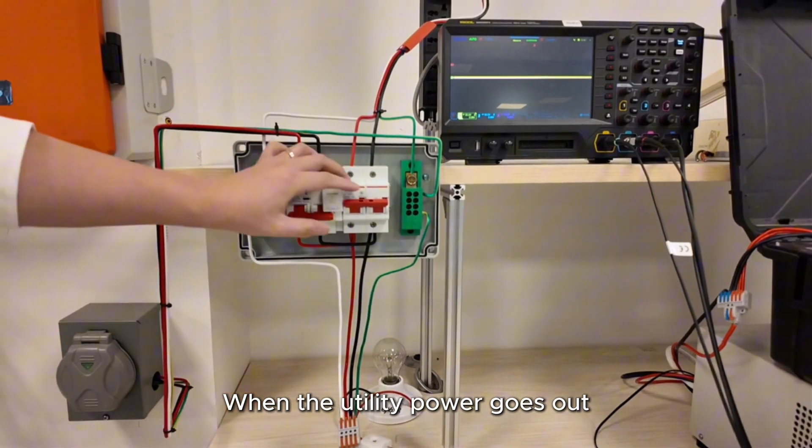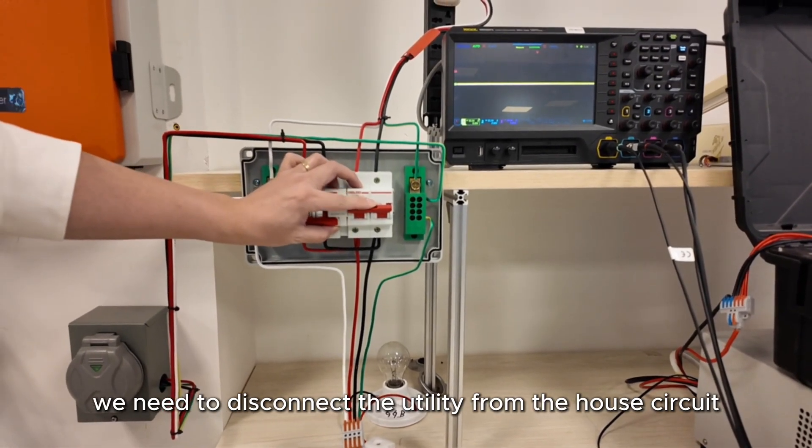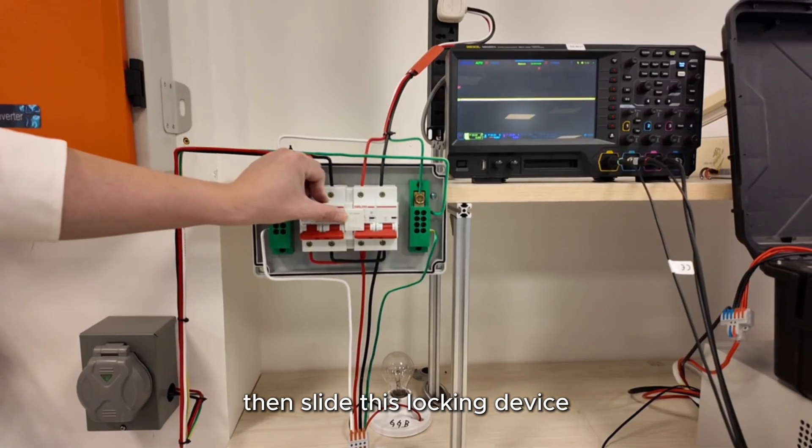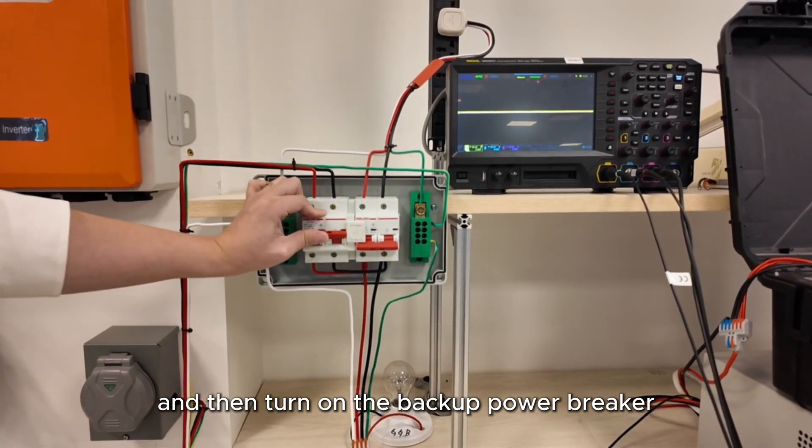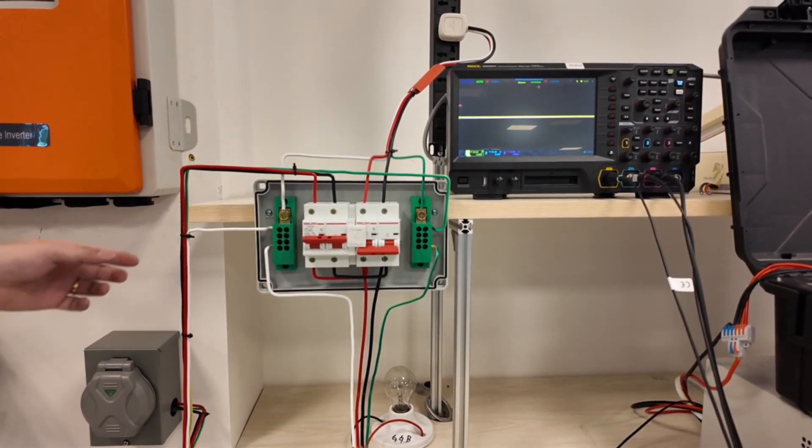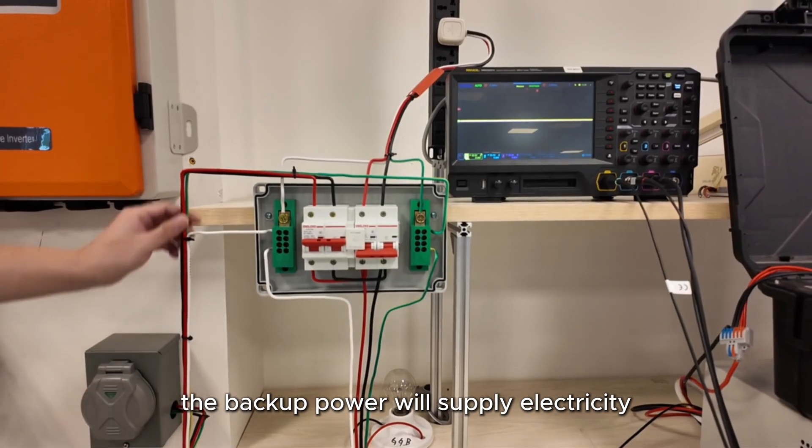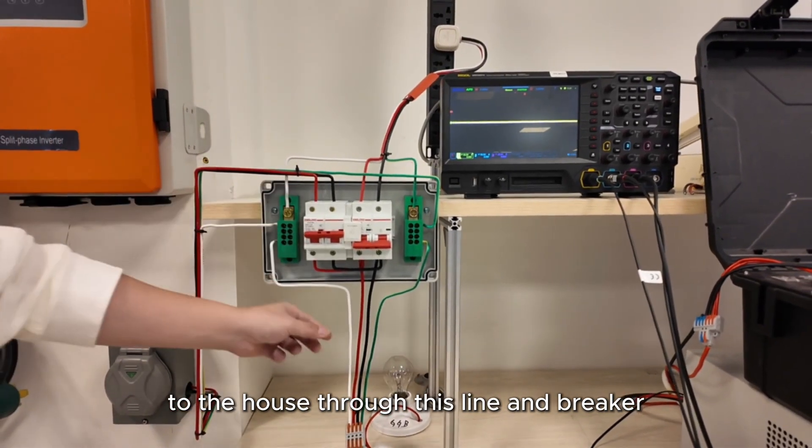When the utility power goes out, we need to disconnect the utility from the house circuit, then slide this locking device and then turn on the backup power breaker. At this point, the backup power will supply electricity to the house through this line and breaker.